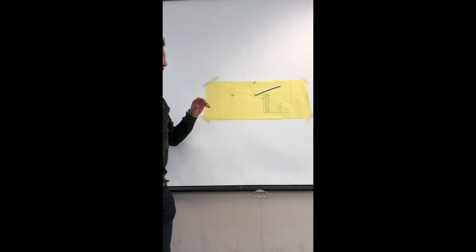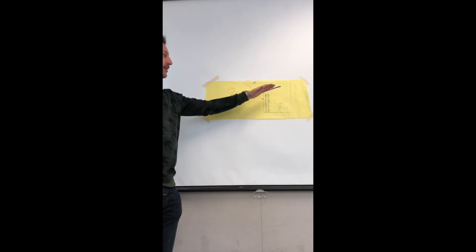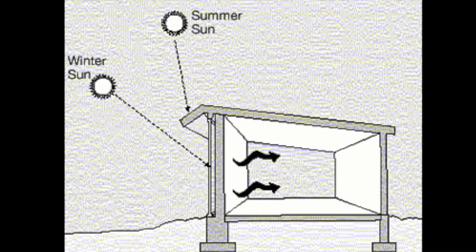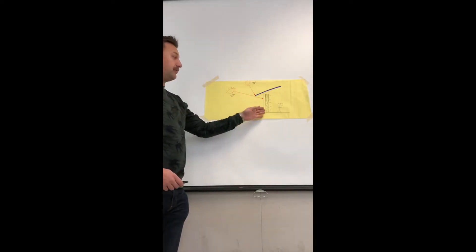So this is a Trombe wall. The Trombe wall works by blocking the summer sun with an eave and allowing the winter sun, based on your sun angle calculation, to pass through this exterior glazing.